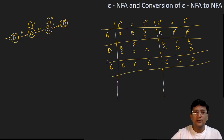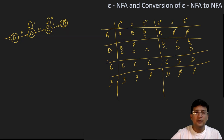Now showing the transition with D. Epsilon closure of D is {D}. D on zero is not defined, so we write phi — there is no need to compute epsilon closure of phi. D on one is also not defined, so epsilon closure of phi is phi. We have now completed this intermediate table.